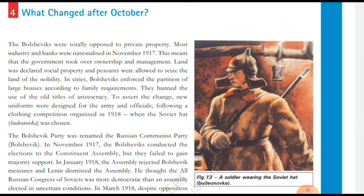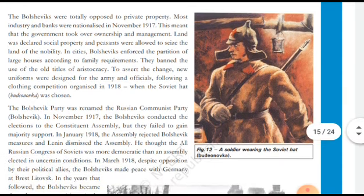After October, the industry and banks were nationalized in November 1970. This is one big major difference — the government took over ownership and management. Land was declared as social property and peasants were allowed to seize the land of the nobility.